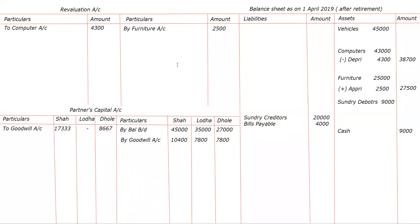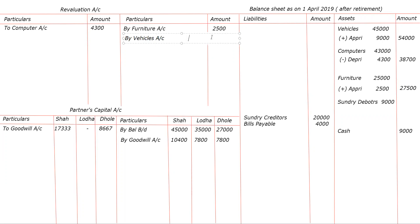Vehicle is appreciated by 20%. The amount comes to 9,000. Second effect: revaluation account credit, buy vehicles: 9,000.